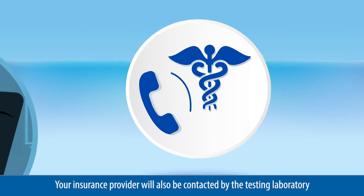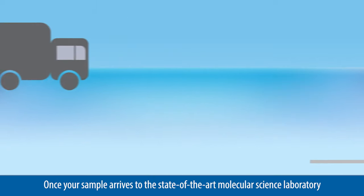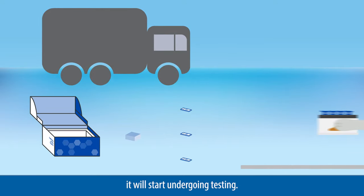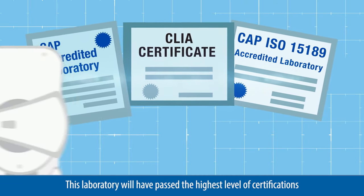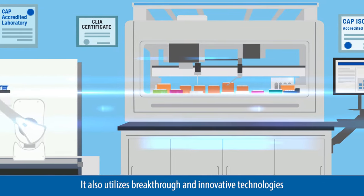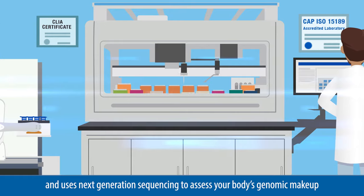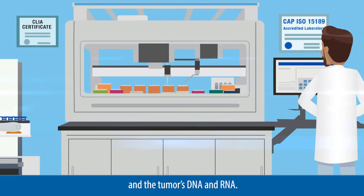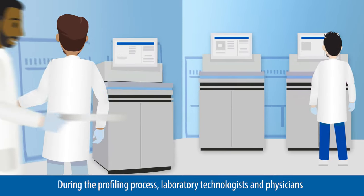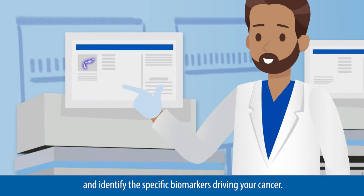Your insurance provider will also be contacted by the testing laboratory to maximize your benefits for testing coverage. Once your sample arrives to the state-of-the-art molecular science laboratory, it will start undergoing testing. This laboratory will have passed the highest level of certifications for industry and regulatory standards. It also utilizes breakthrough and innovative technologies to analyze the tumor's proteins and uses next-generation sequencing to assess your body's genomic makeup and the tumor's DNA and RNA. During the profiling process, laboratory technologists and physicians perform many advanced tests to assess your condition and identify the specific biomarkers driving your cancer.